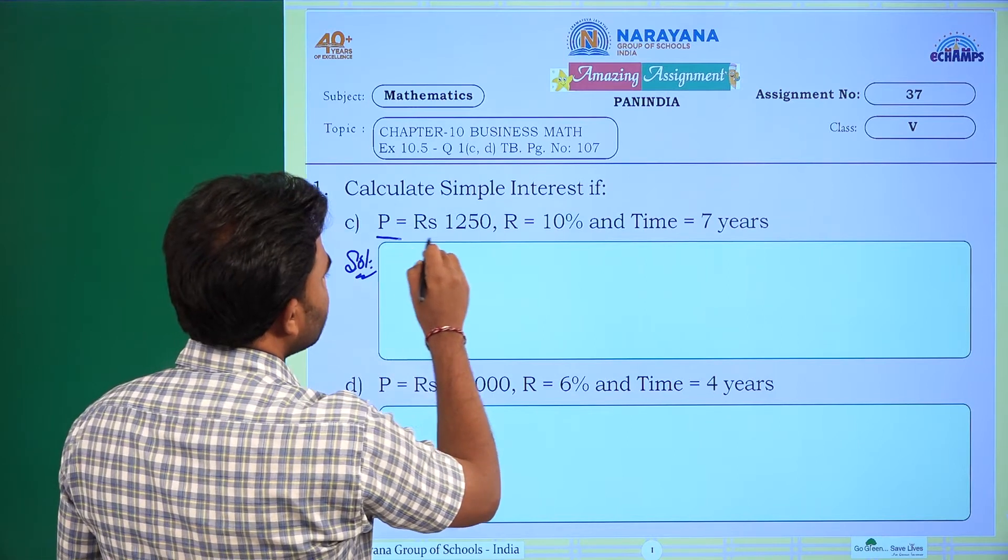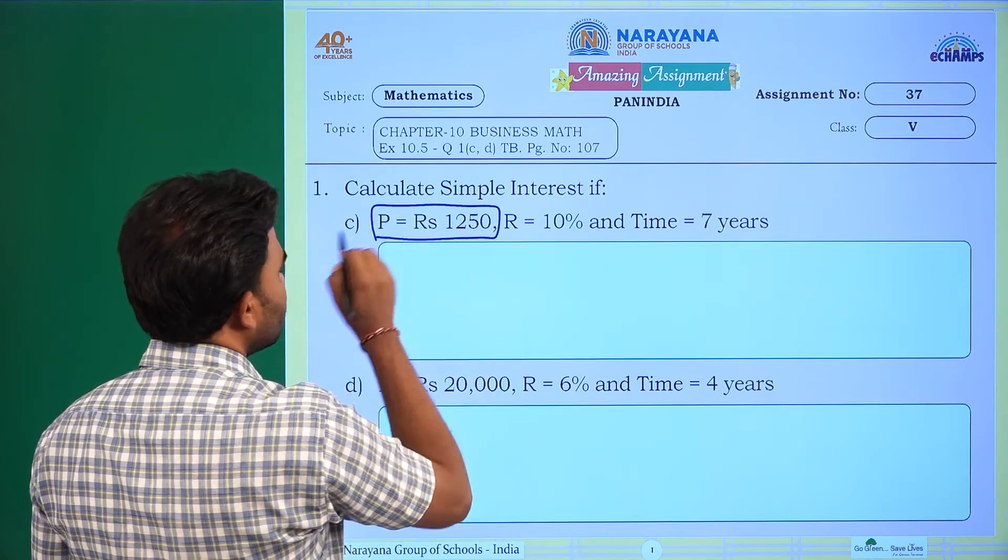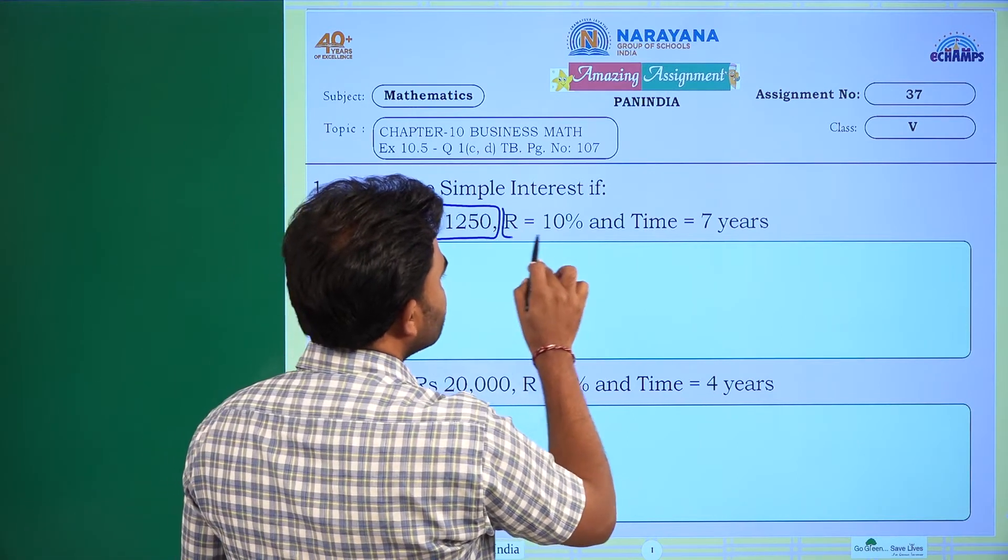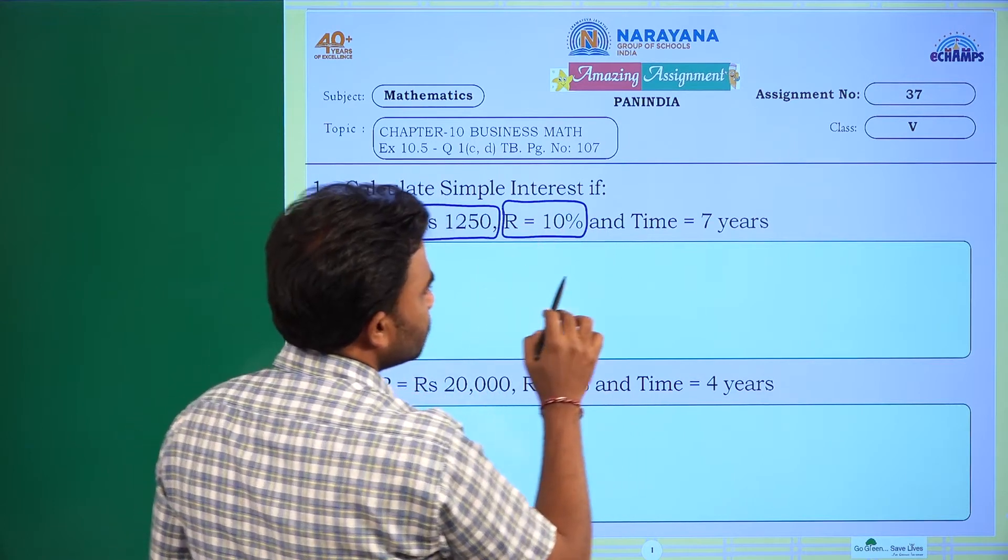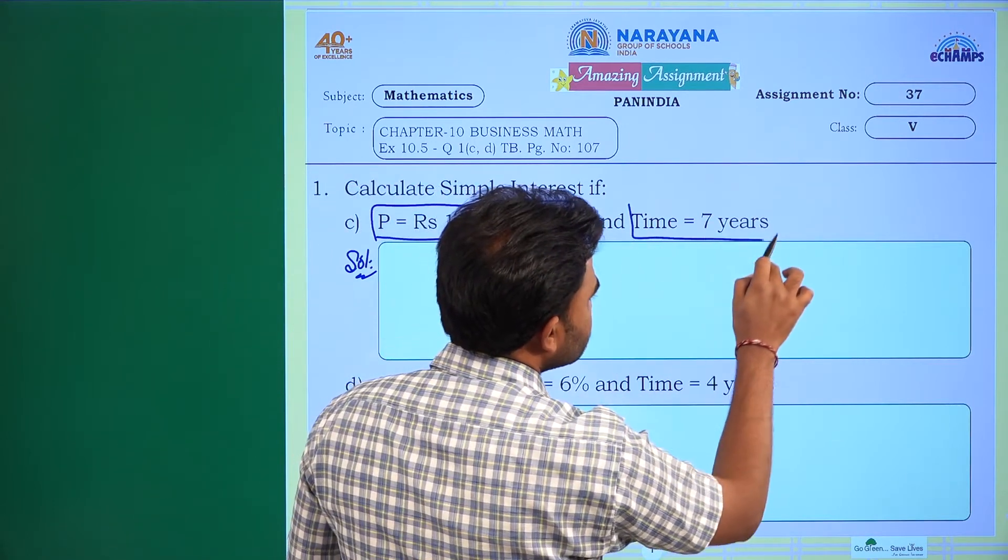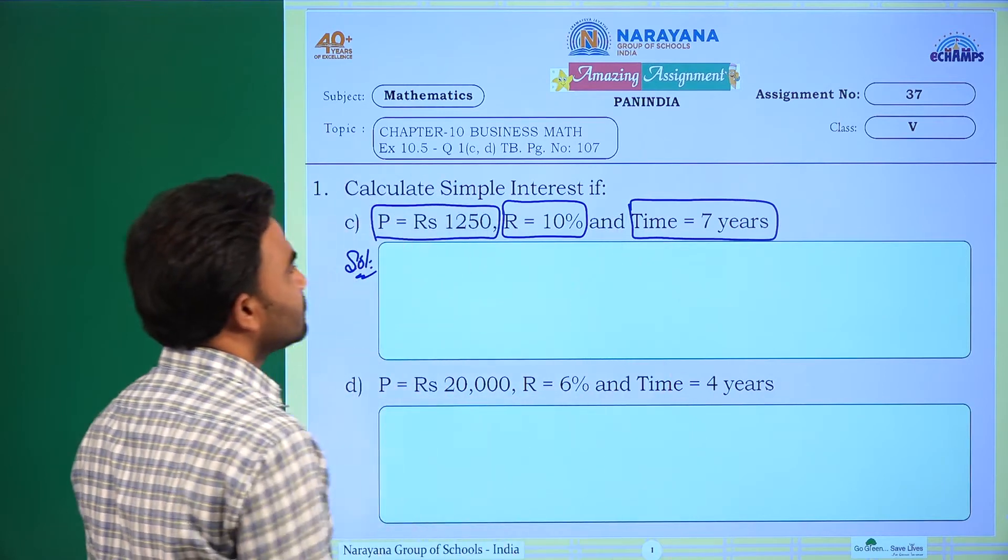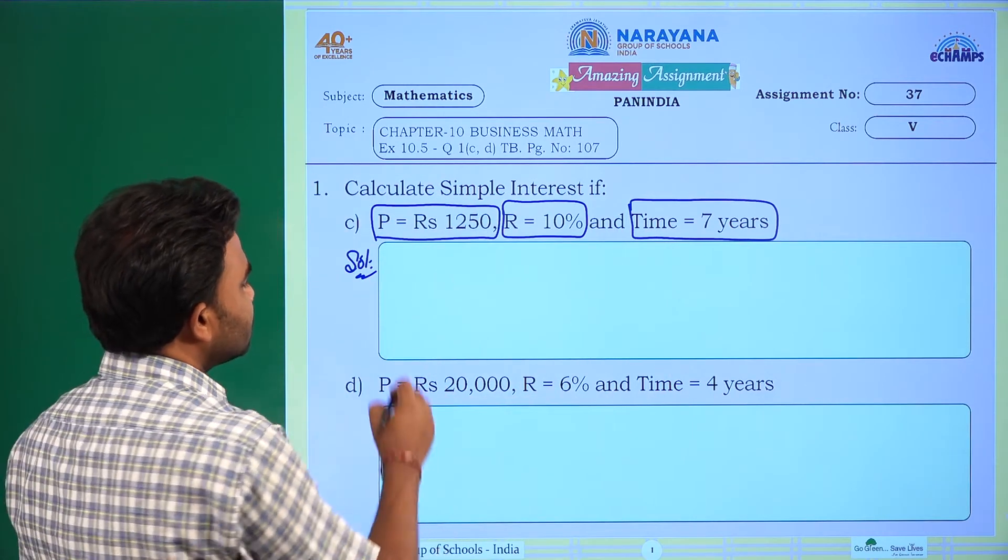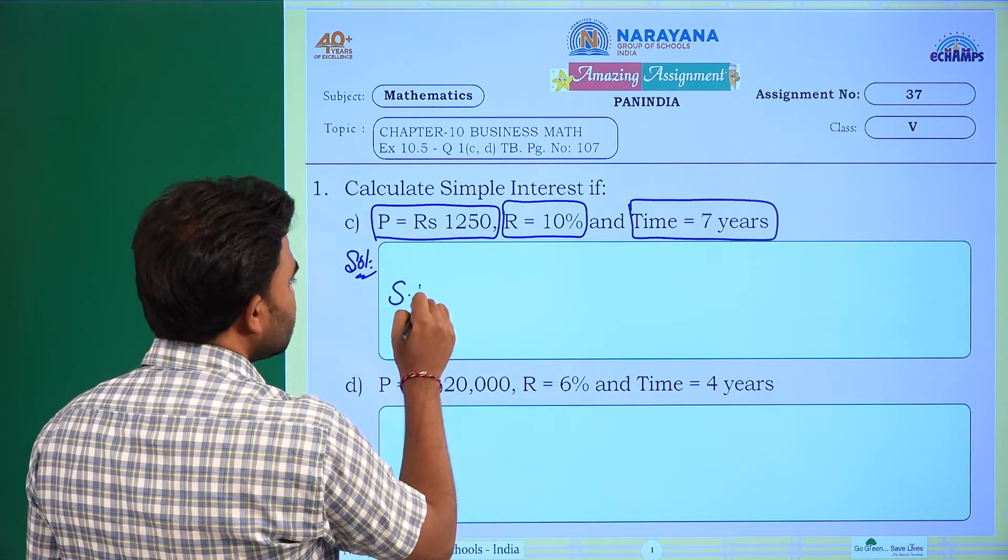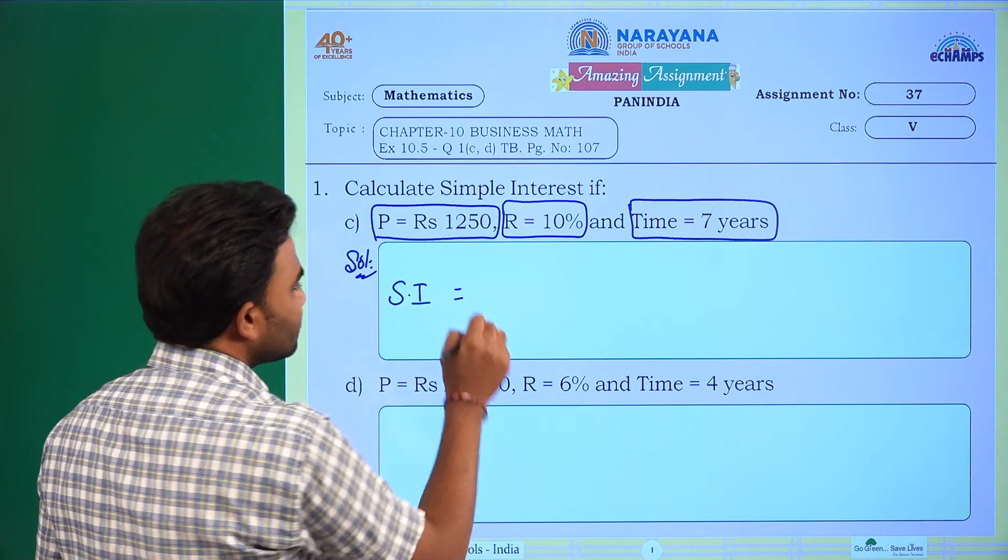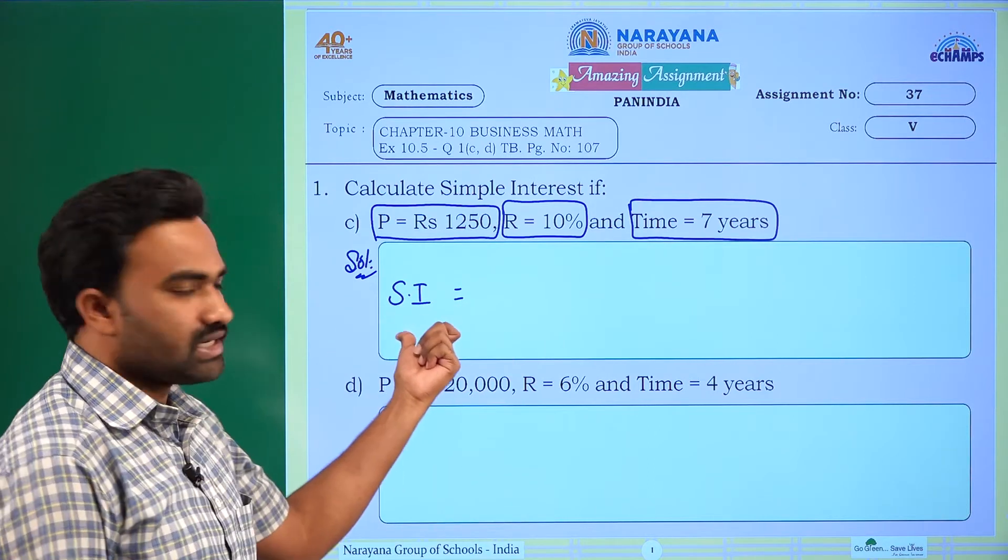The given principal is 1250, rate of interest is 10%, and the time is 7 years. Now simple interest is equal to SI, that means simple interest.